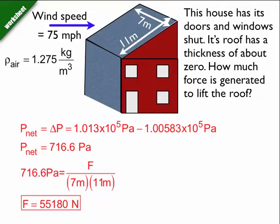So that net pressure is equal to the force over the area, which is 7 times 11, that's the area of the roof, that's the area that the wind is applied to, and that gives me a force of 55,180 newtons, or rather large force at that.